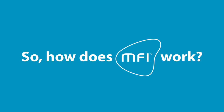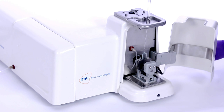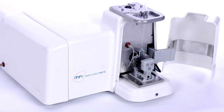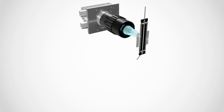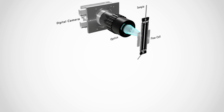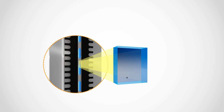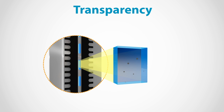So how does MFI work? As the sample moves through the flow cell, MFI captures images and analyzes every particle. The system is precisely aligned for high sensitivity. Every particle is analyzed in real time for particle count, size, transparency, and morphology.